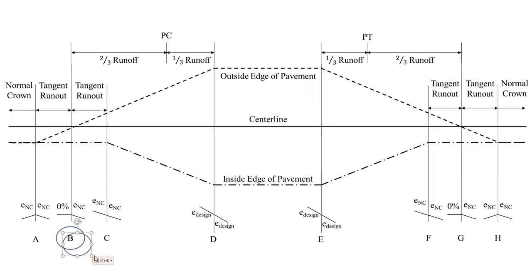So we want to know the stations of these two points. Depending on what jurisdiction you're in you may have a different division of runoff. In North Carolina it's common to have one third and two third on each side of the PC and the PT. It can be 60-40, 70-30. Different states and jurisdictions do different things but this is what we're going to use in this problem.